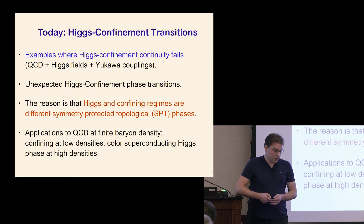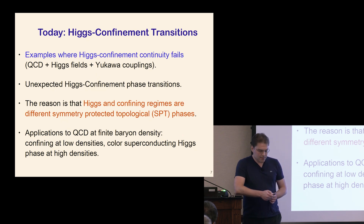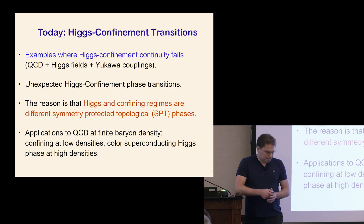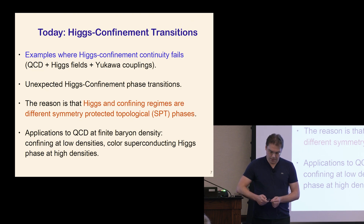There is a relation to what David Kaplan talked about yesterday. After discussing relatively straightforward examples, I'll try to argue that this idea has applications to QCD at finite baryon density, which is confining at low densities but is actually in a color-conducting Higgs phase at high densities.